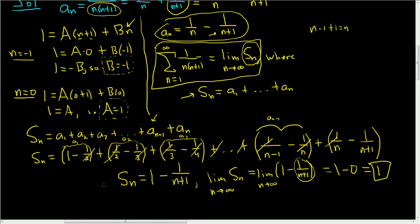s sub n, by the way, has a name. It's called the nth partial sum. I hope this video has helped. This is the easiest example I could think of of telescoping series.